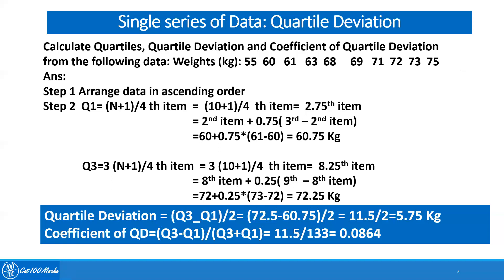We have now calculated the Quartiles. Next, we find Quartile Deviation using the formula Q3 minus Q1 divided by 2. So 72.25 minus 60.75 divided by 2 gives 5.75 kilograms. Quartile Deviation is an absolute measure of dispersion, so it has a unit. Coefficient of Quartile Deviation is Q3 minus Q1 divided by Q3 plus Q1, giving 11.5 divided by 133, which equals 0.0864.